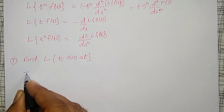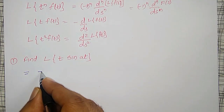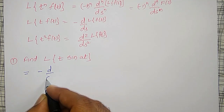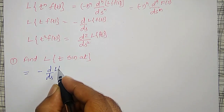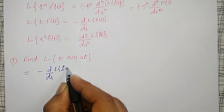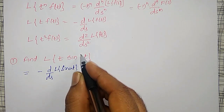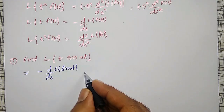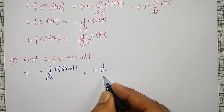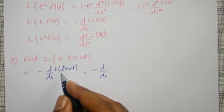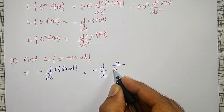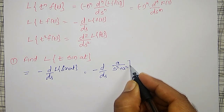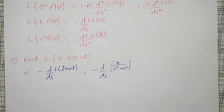Which I can write as minus d by ds of the first derivative of the Laplace transform of sin(at), because sin(at) is my f of t. This equals minus d by ds of a divided by s squared plus a squared, which I have to differentiate with respect to s.